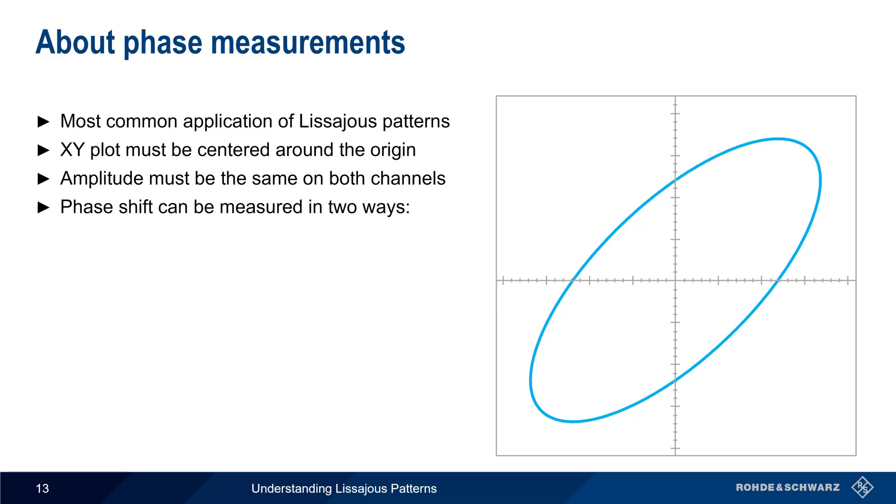Phase shift can be measured in two ways. The first is by finding the distance between where the pattern touches the Y axis, and the distance between the max and min values of the pattern. The phase shift is then calculated by taking the arc sine, or inverse sine, of this ratio. Here, the result is 45 degrees.